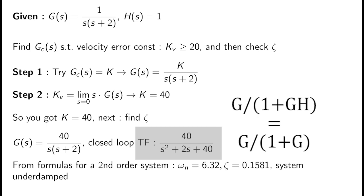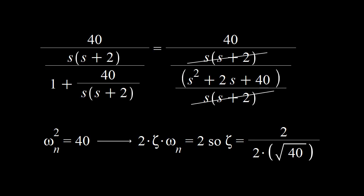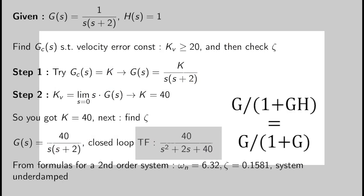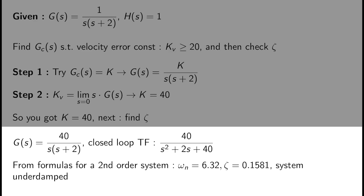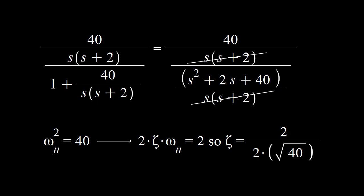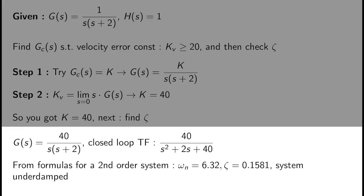Because when time equals infinity, s equals zero. You get K equals 40 from that calculation. Once you get K equals 40, you need the closed loop transfer function by closing the loop. The formula is G divided by (1 plus G times H), and since H equals one it simplifies to G over (1 plus G). Plugging in G gives 40 over (s² plus 2s plus 40). You can then solve for the damping ratio and natural frequency using second order system formulas. Since zeta is less than one, the system is underdamped.